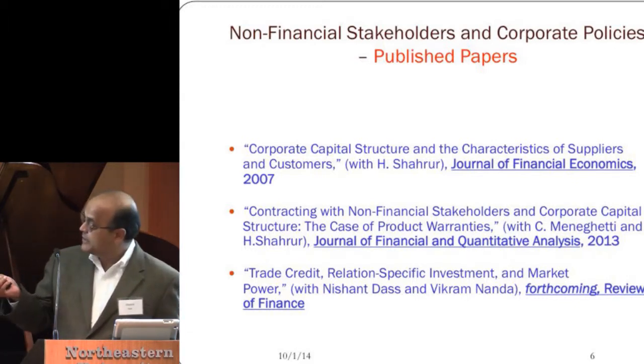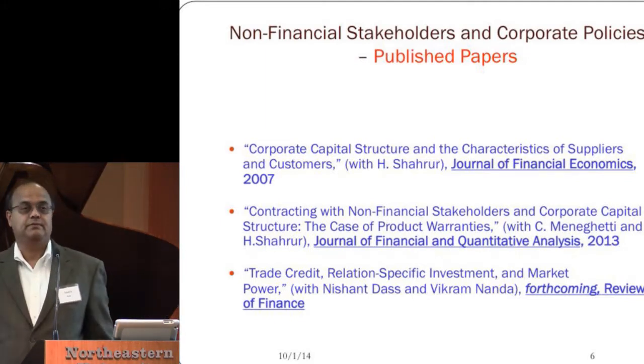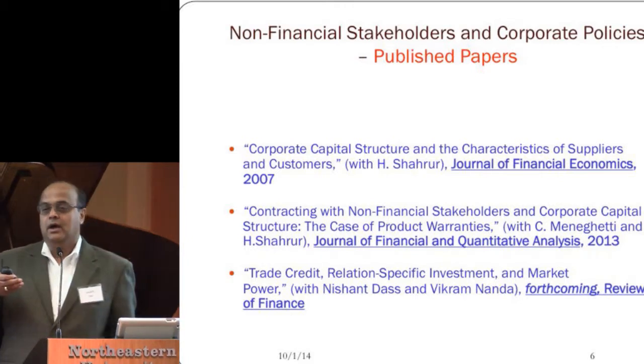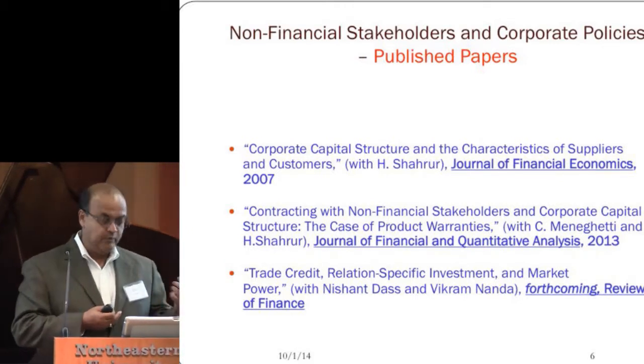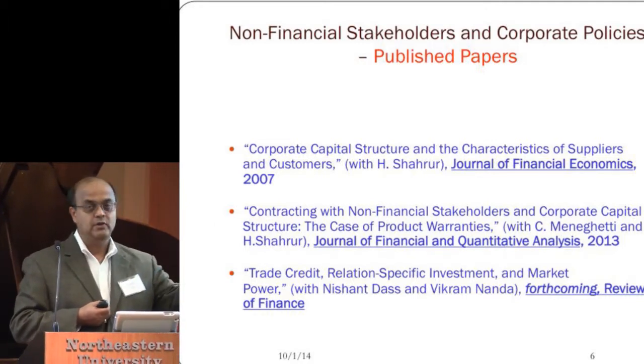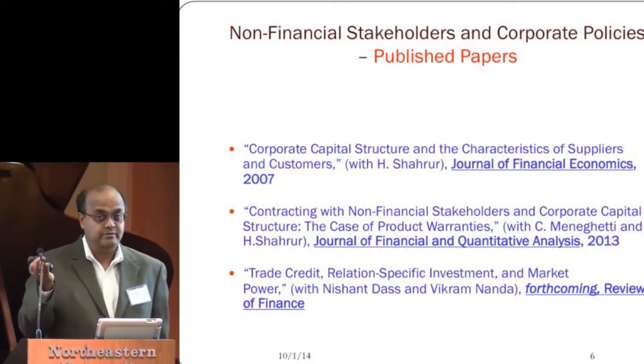The first paper looks at how a firm's financial decision is affected when you take into account the interests of your supplier industries as well as your customer industries. This is an empirical paper. The idea is that I want my supplier to make investments that are specific to our relationship — what we call relationship-specific investments — which maintain value only as long as the relationship continues. If the supplier isn't convinced the relationship will last — and one reason it might break is if my firm goes bankrupt — I convince the supplier by keeping my level of debt low as a commitment. We test this hypothesis and find very significant evidence consistent with that.